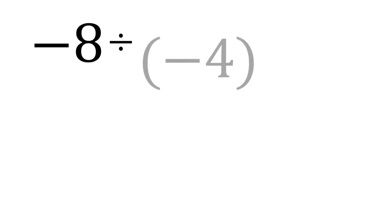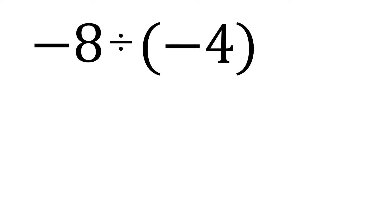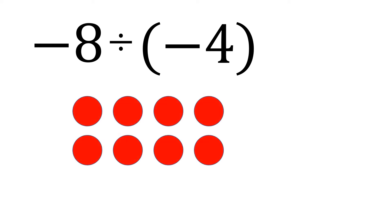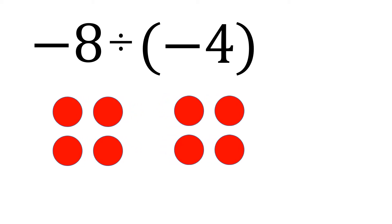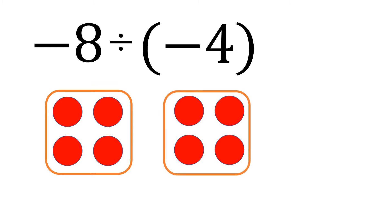Another example: negative 8 divided by negative 4. Let's visualize negative 8 with 8 negatives, and then we will divide this into groups of 4 negatives. We have one group and another group — 2 groups of 4 negatives. That means negative 8 divided by negative 4 is positive 2.